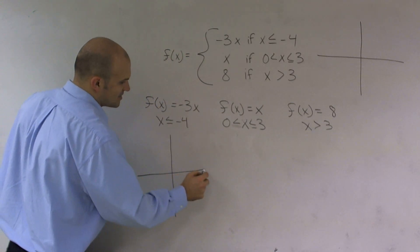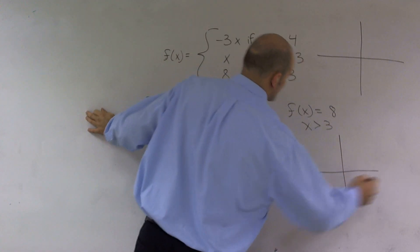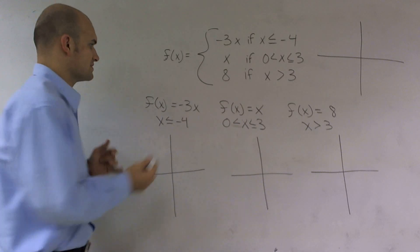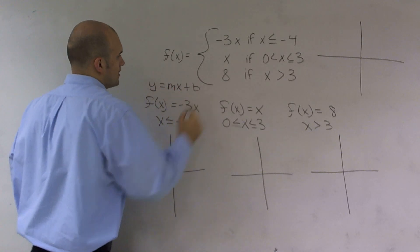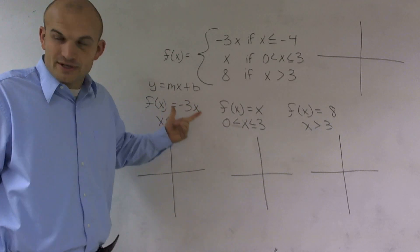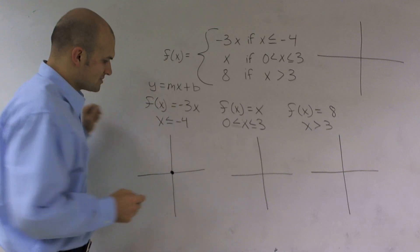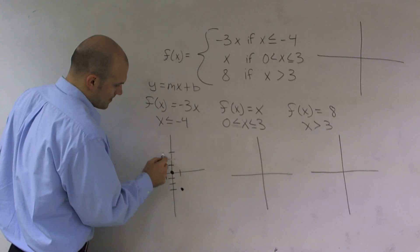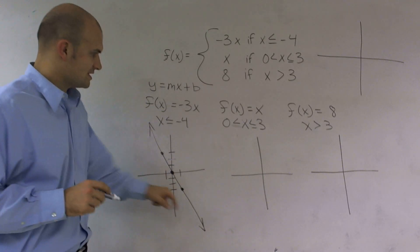Let's look at what each one of these graphs separately will look like. The first one is f(x) = -3x. If you don't remember how to graph this, remember slope-intercept form, where b is our y-intercept and m is our slope. Here, our y-intercept is zero, so it crosses at zero. My slope tells me to go down three over one, or up three to the left one. So it's going to look something like this, continuing in that direction.